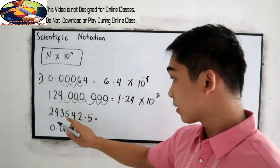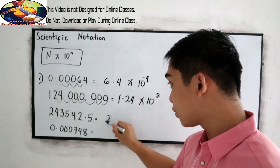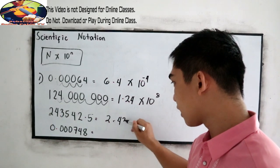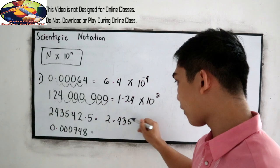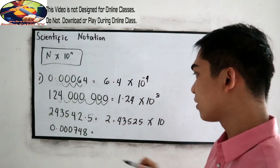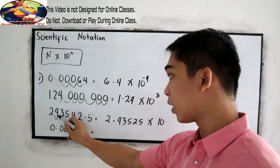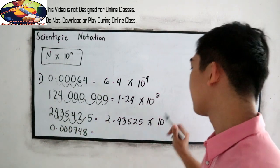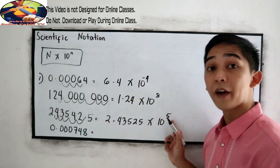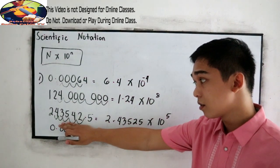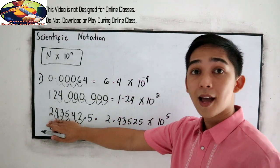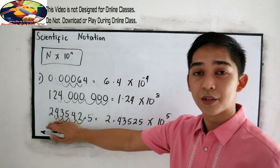This next number will become 2.43525 times 10. We move the decimal point 1, 2, 3, 4, 5 — raised to 5. Positive 5, because our decimal point is here and we know that this number has a large value.